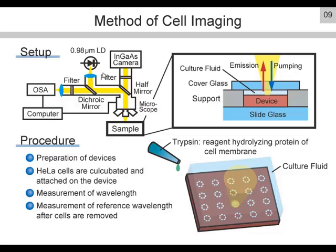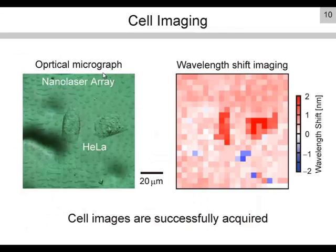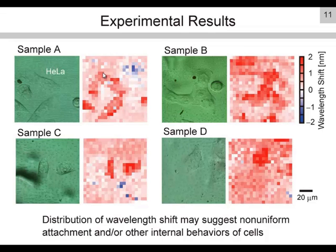Let me show an example result. This shows the optical micrograph of HeLa cells attached on the nanolaser. You can see the attached cells here and here. This shows the mapping of wavelength shifts — it shows clear red shifts at the positions of the cells. The cell images are successfully acquired. The spatial resolution is 5 microns at present and not sufficient to observe the details. This shows similar experimental results, where each sample shows red patterns of attached cells.